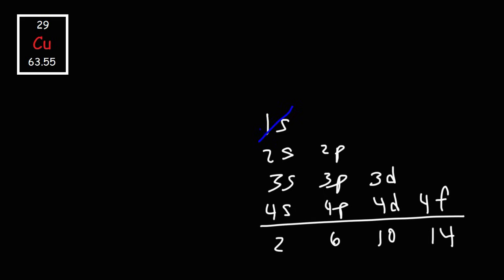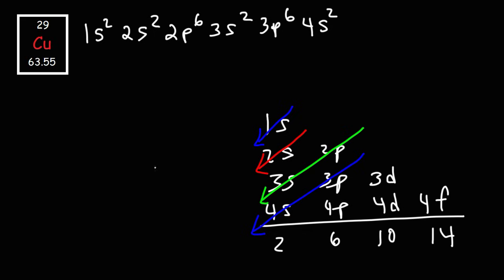So let's begin with the 1S level. It's going to be 1S2. Following that, it's going to be 2S2, and then we're going to move on to 2P6, and then 3S2. After that, 3P6. So right now, we have a total of 20.